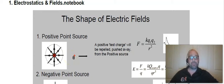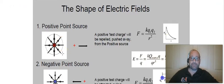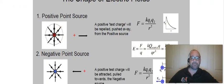A positive test charge will be repelled or pushed away from a positive source. So the shape of all monopole charges is like this picture here for positive and this one here for negative, but the difference is the arrows will point in different ways.